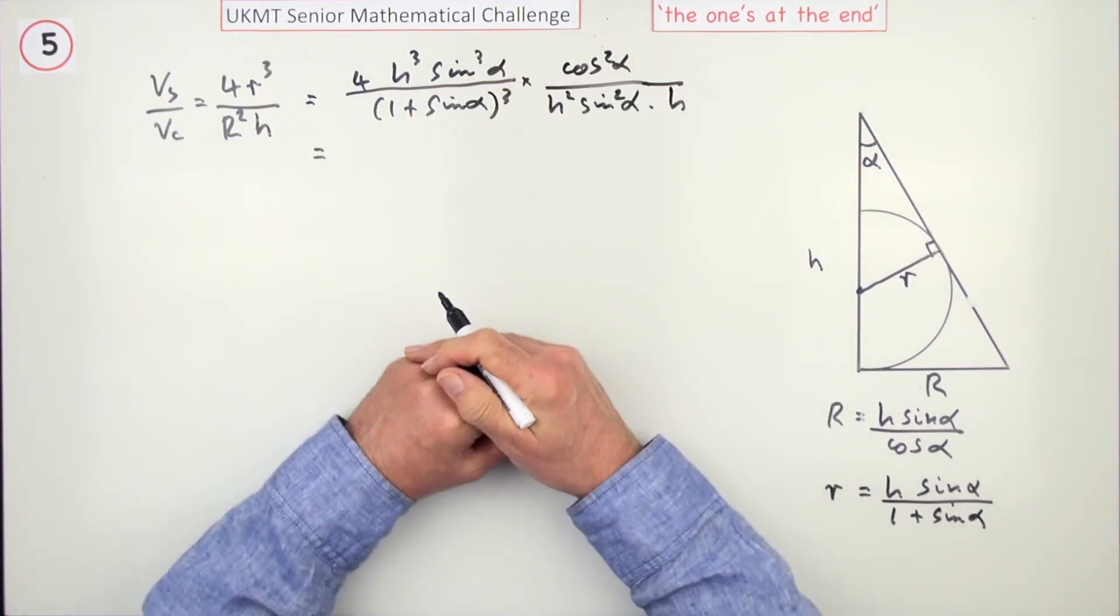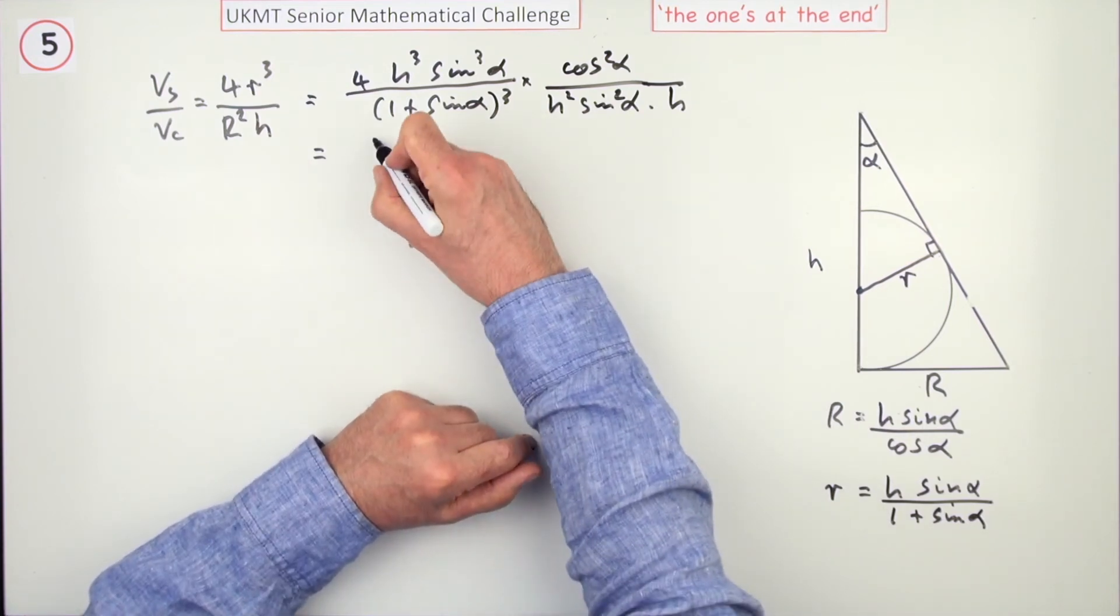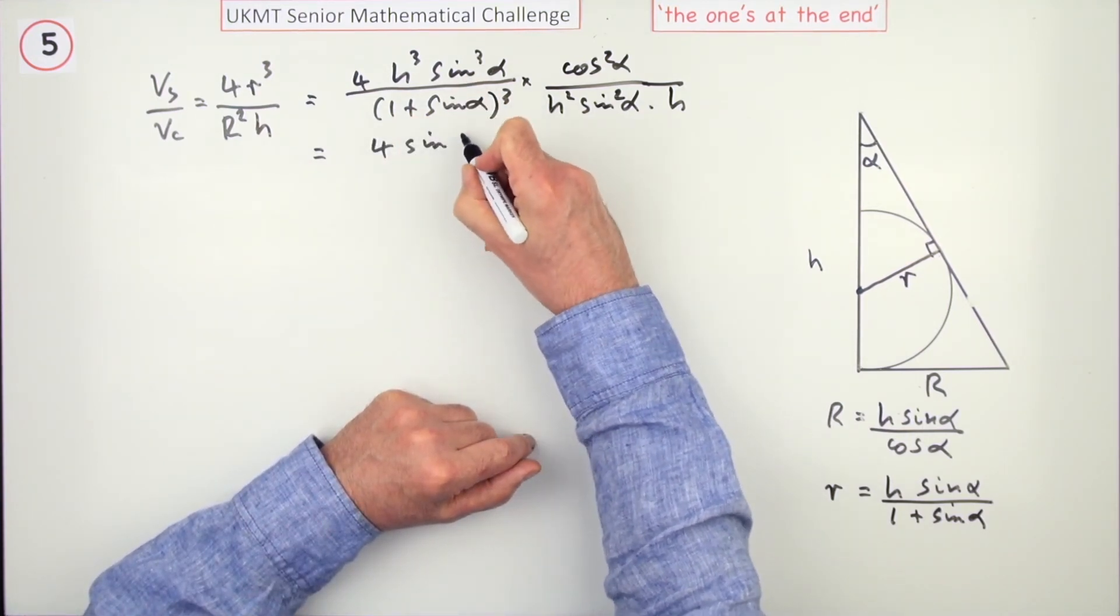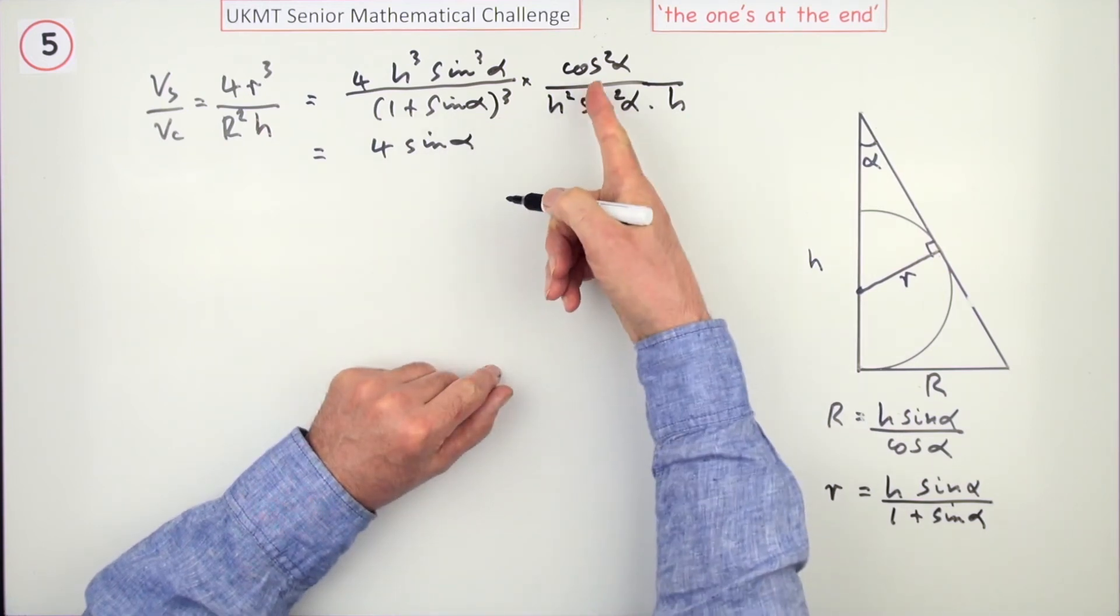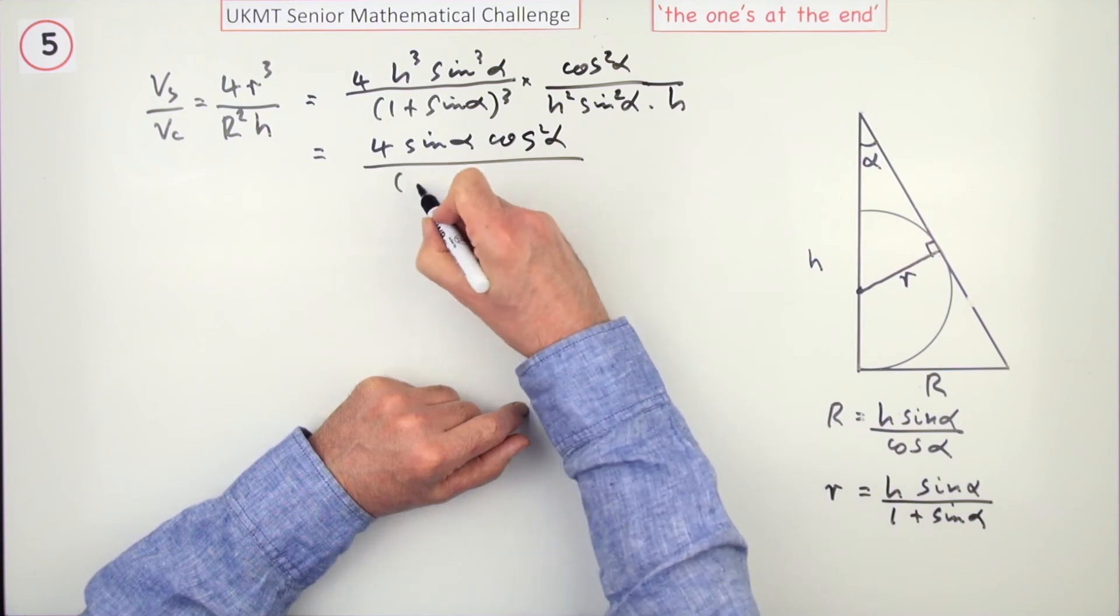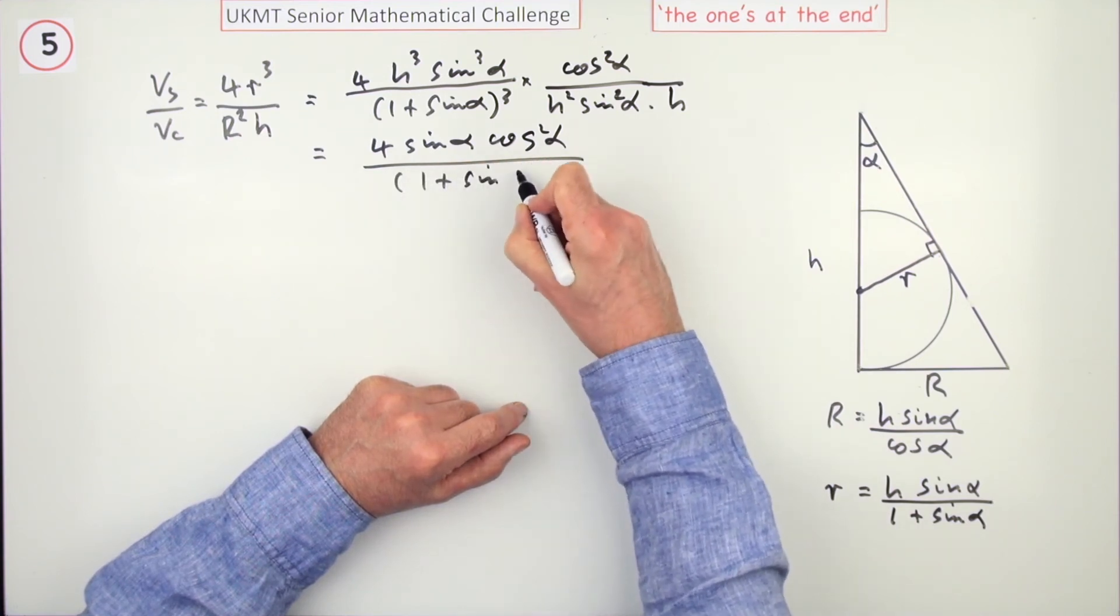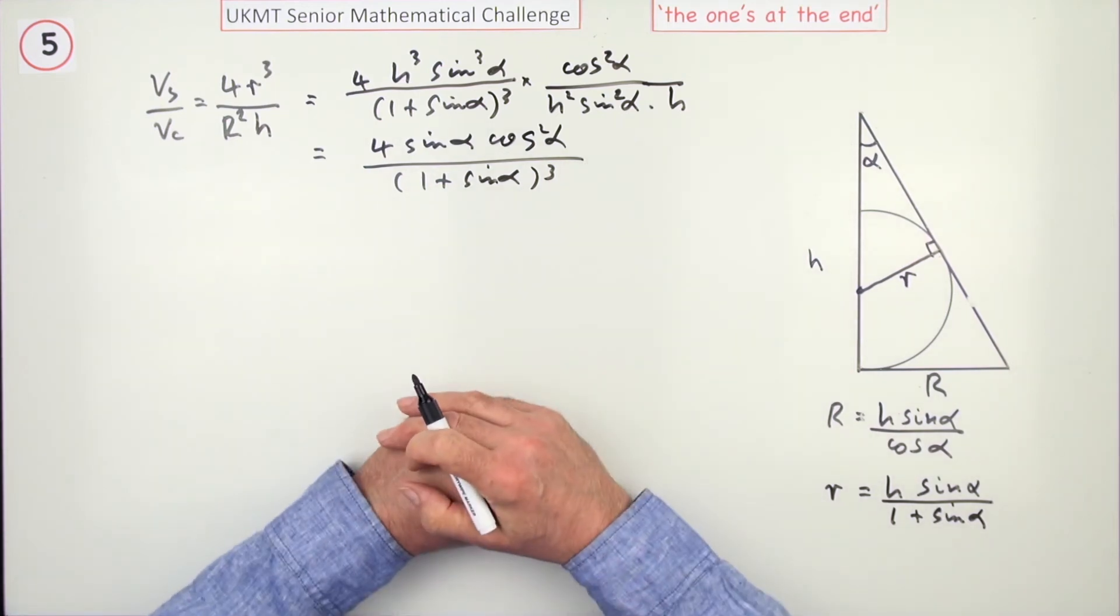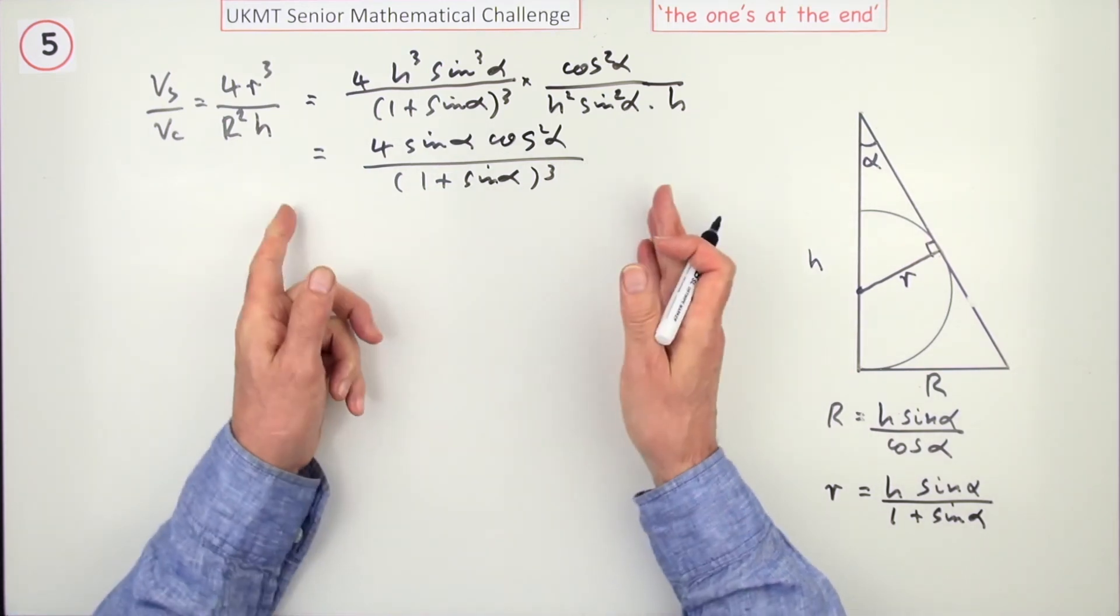Tidy that up, you should be there, because loads of things cancel out. So what am I left with? I'm left with a four, I'm left with a sin α, I'm left with cos² α. And underneath, I'm left with (1 plus sin α)³. So there we go. And you check the set of solutions, and it's not there. It's not wrong, it's just not there.